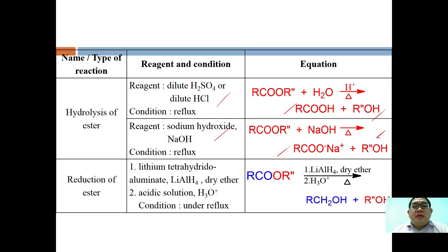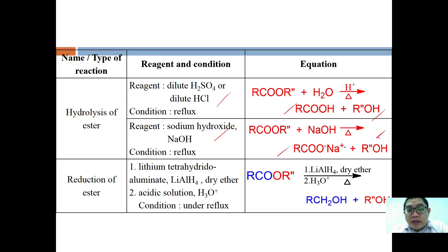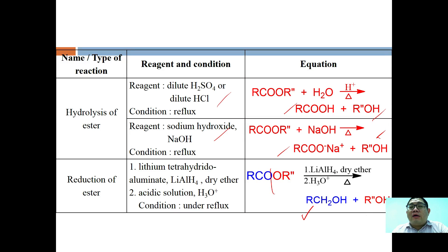The second reaction of esters is reduction. A strong reducing agent such as LiAlH4 in dry ether, followed by H2O workup, is used. The carbonyl from RCOO is first reduced to an aldehyde which undergoes further reduction to a primary alcohol. The RO portion also forms an alcohol depending on its class — primary or secondary.